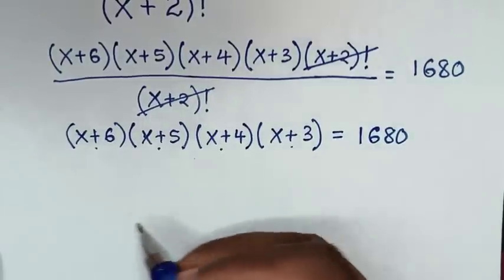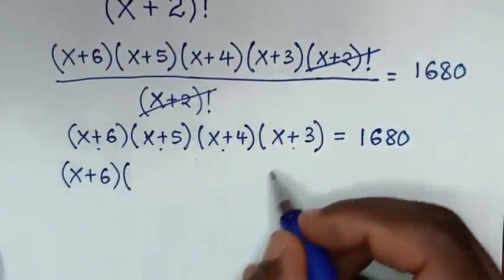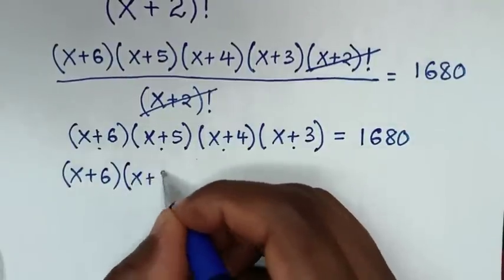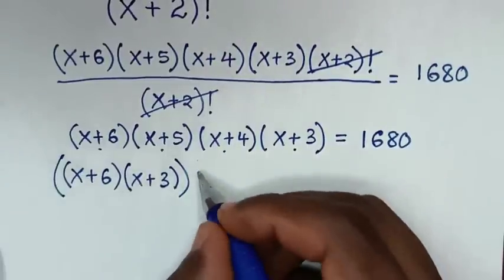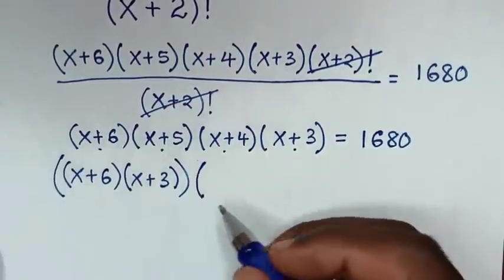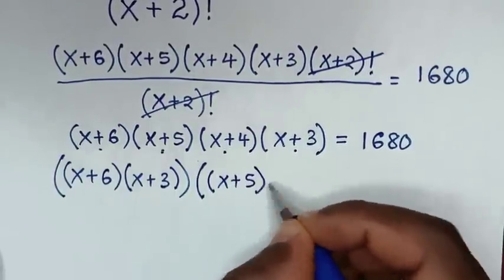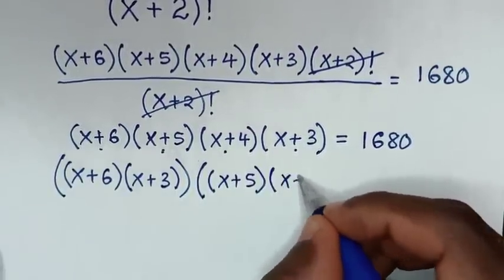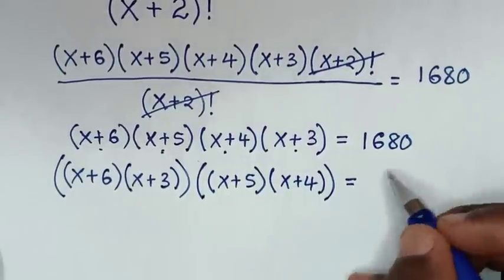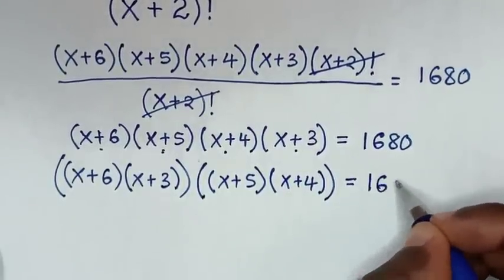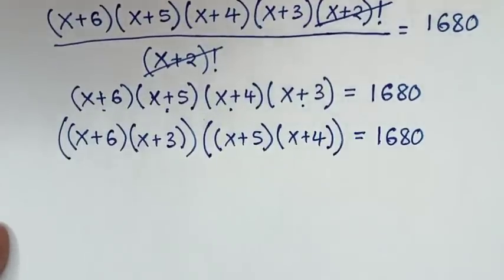Now we pair the terms: multiply (x+6) with (x+3) together, and multiply (x+5) with (x+4) together, giving us [(x+6)(x+3)] · [(x+5)(x+4)] = 1680.